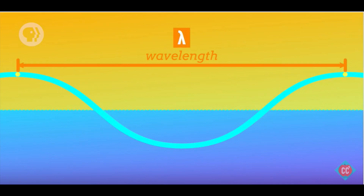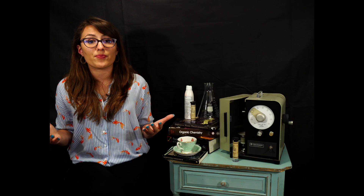Wavelength, which is denoted by lambda, is the distance between adjacent crests. It is important to note that wavelength has units of meters, which can be accompanied by a unit prefix such as micro or nano.